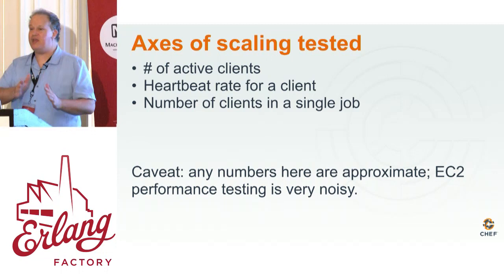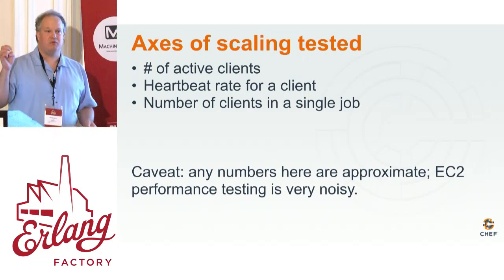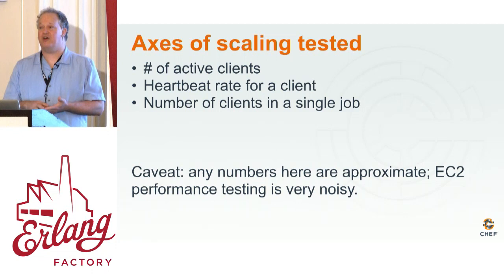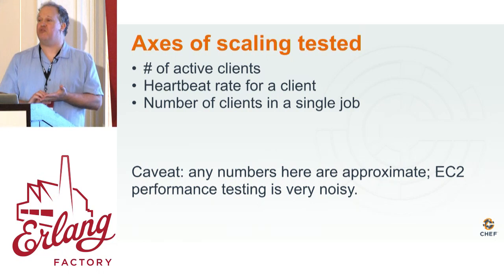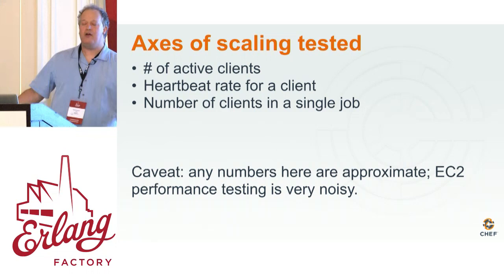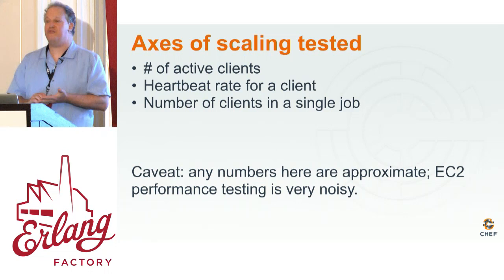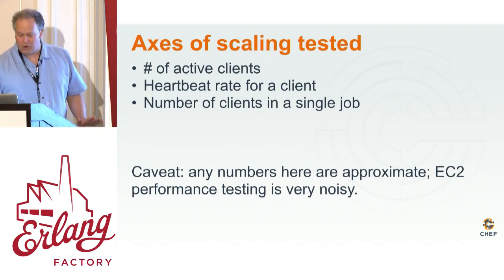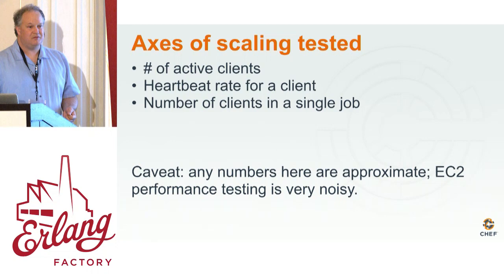I want to give sort of a caveat: don't trust my numbers past one sig fig, because all the measurement was done in EC2. You have to check the weather in EC2 sometimes before you run a performance test — on a bad day the whole software package looked like it had failed, and then I started up on a fresh set of nodes and discovered it was running fine. This is a communications-intensive workload and getting a bad switch layout or a noisy neighbor seems to be a thing.